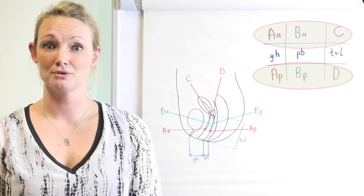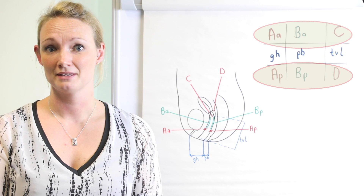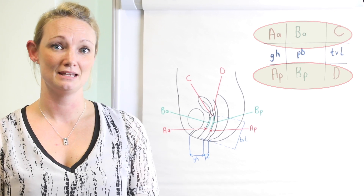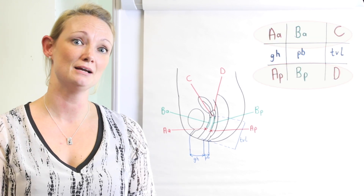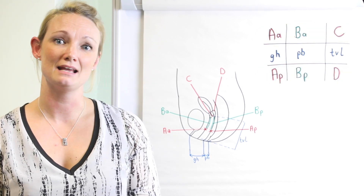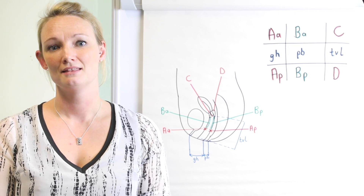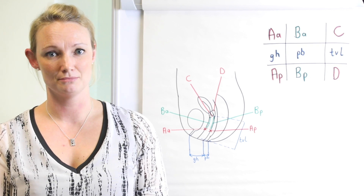Six relate to specific points in the vagina and they are measured with respect to the hymen. If they lie above the hymen, they're given a negative number, and if they are below, they're given a positive number.